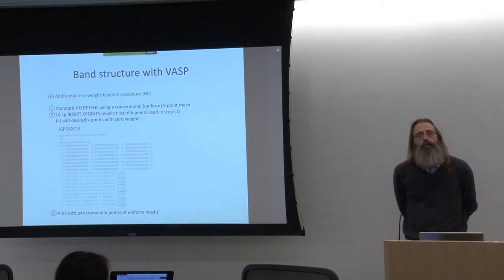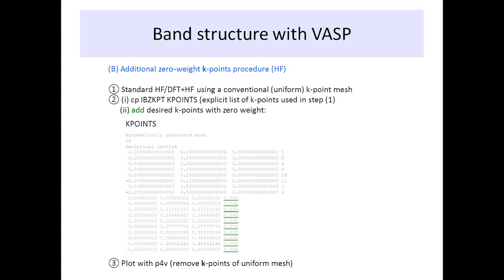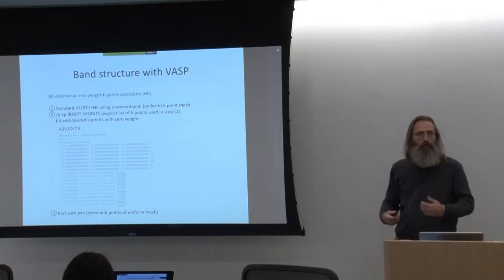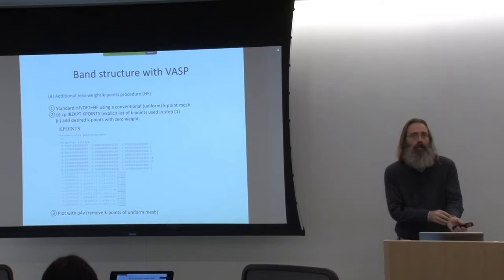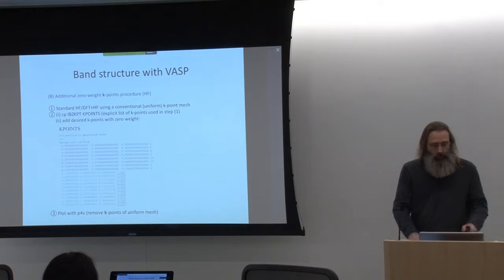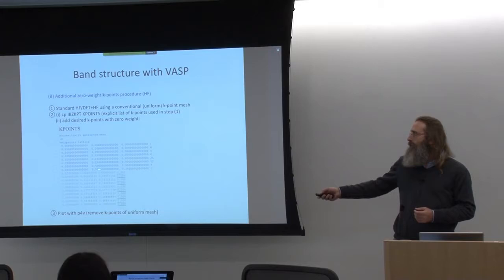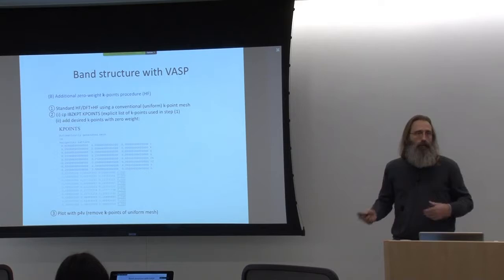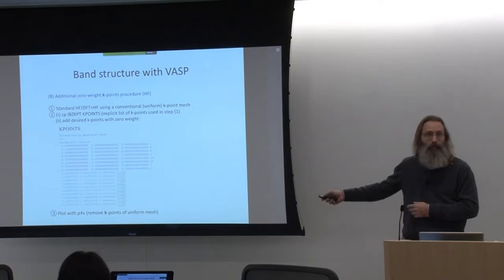The procedure is: copy the IBZKPT file (the irreducible part of the Brillouin zone) to your KPOINTS file, rename it, add the K-points you are interested in, and adjust the total number of points accordingly. Regarding symmetry: for the density computation, the zero-weight K-points are ignored because their weight is zero, so the fact that they don't reflect the crystal symmetry doesn't show up in the result.